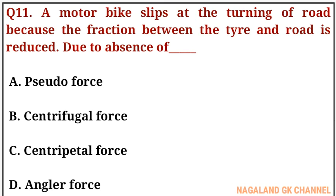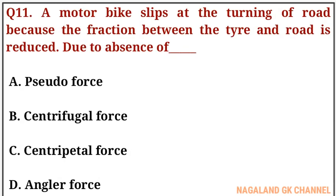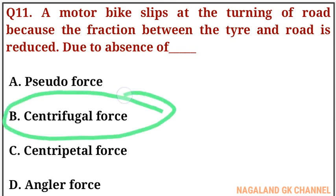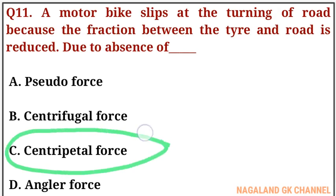Question number eleven: a motorbike slips at the turning of a road because the friction between the tire and road is reduced due to the absence of what? The correct answer is option number C, that is centripetal force.